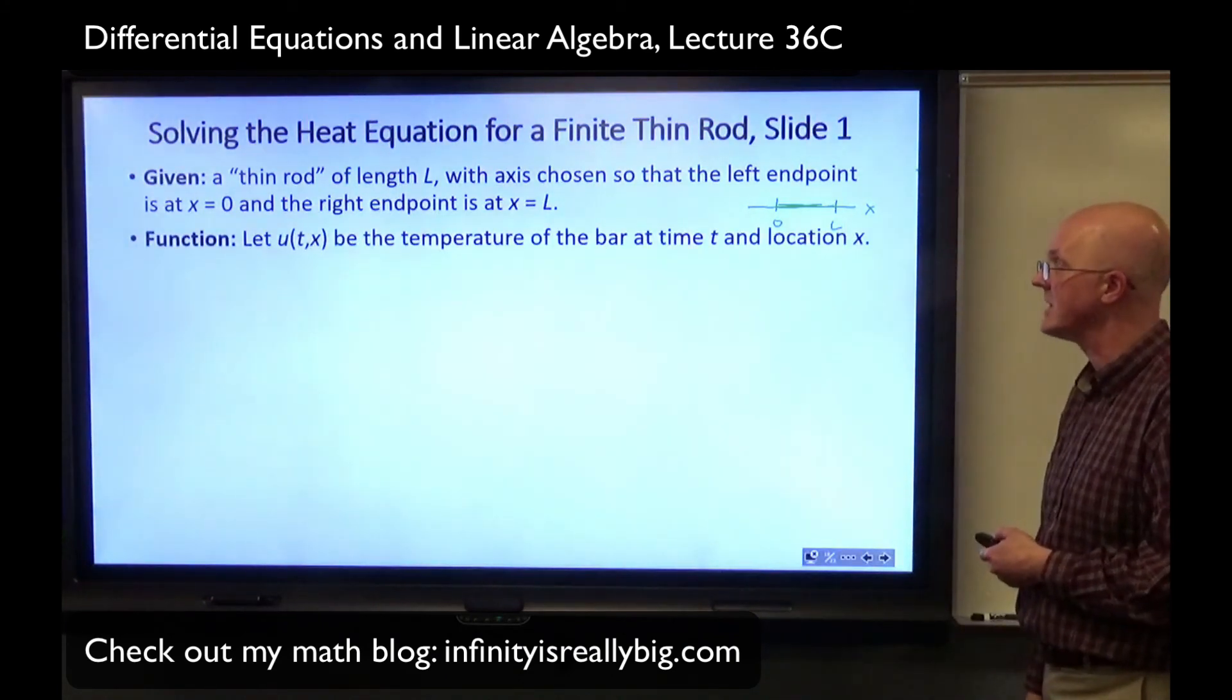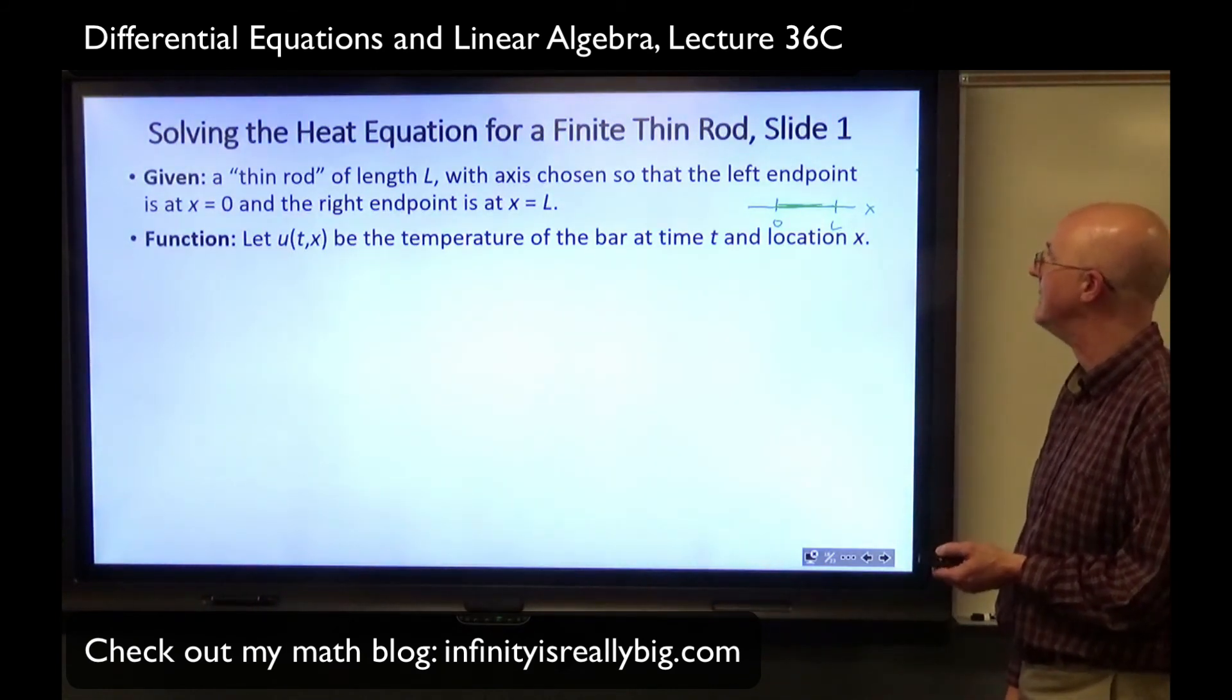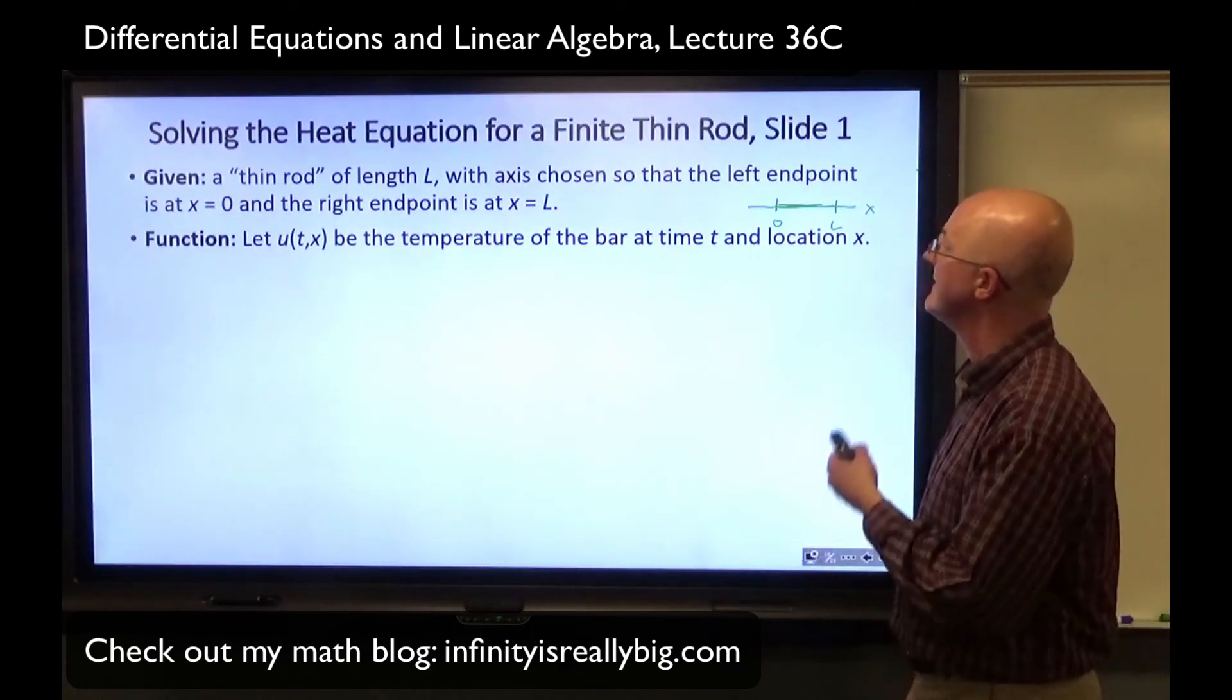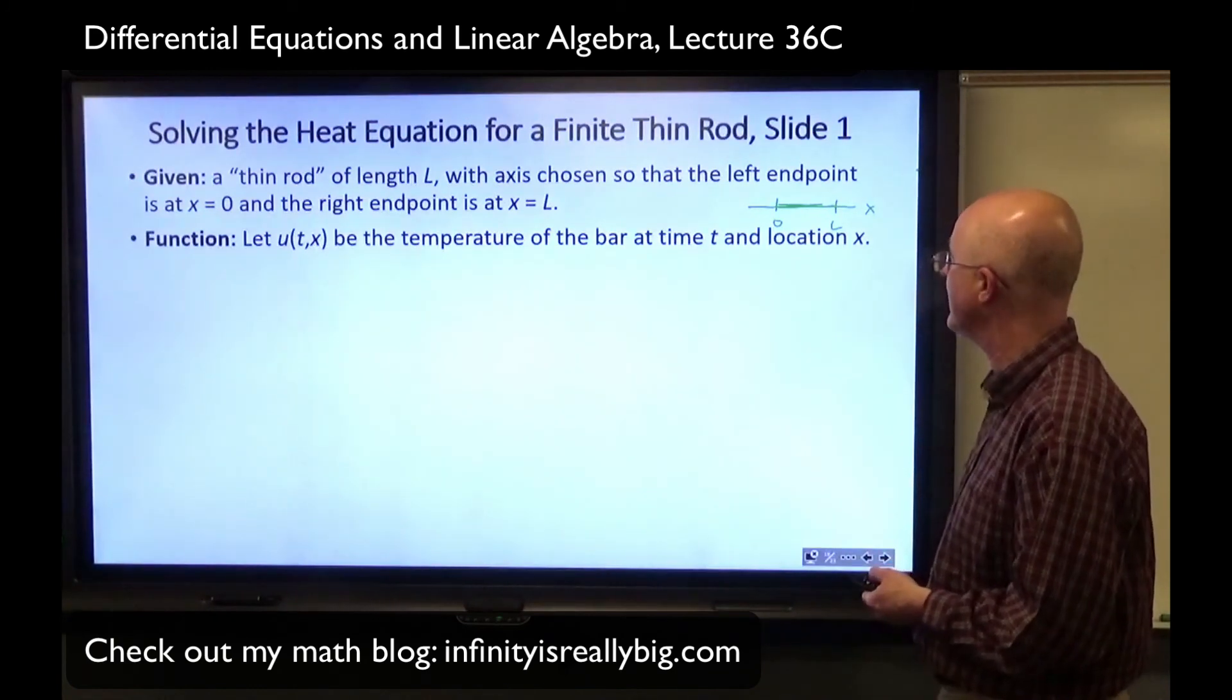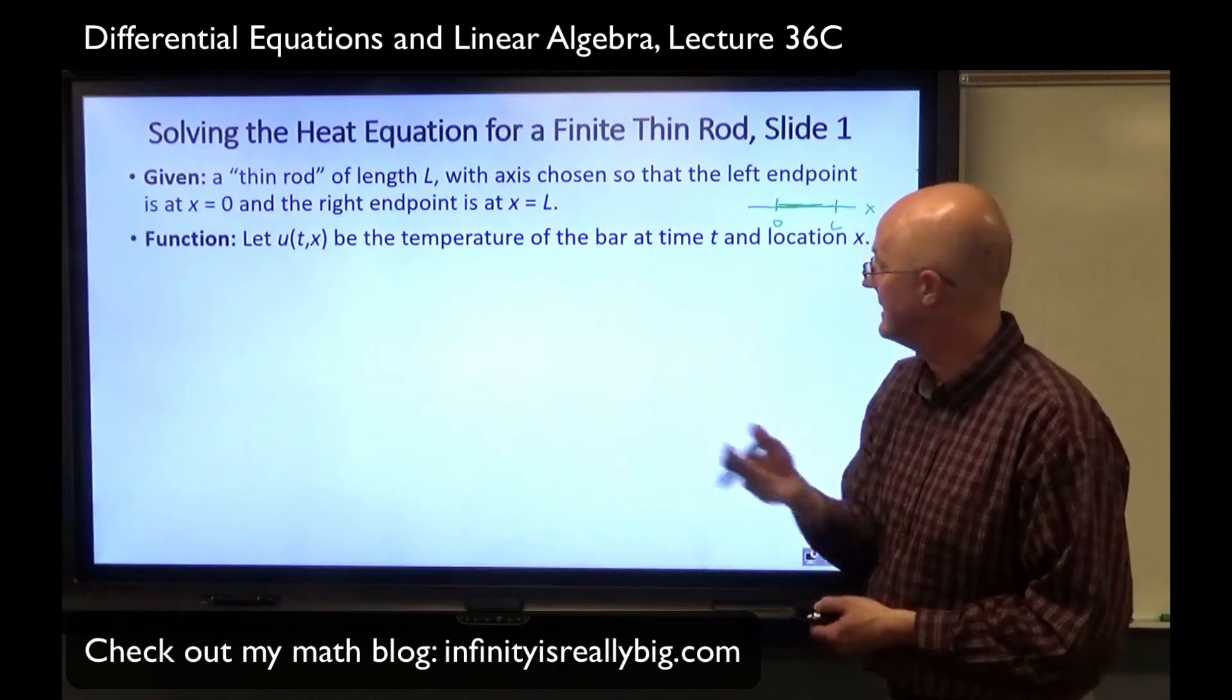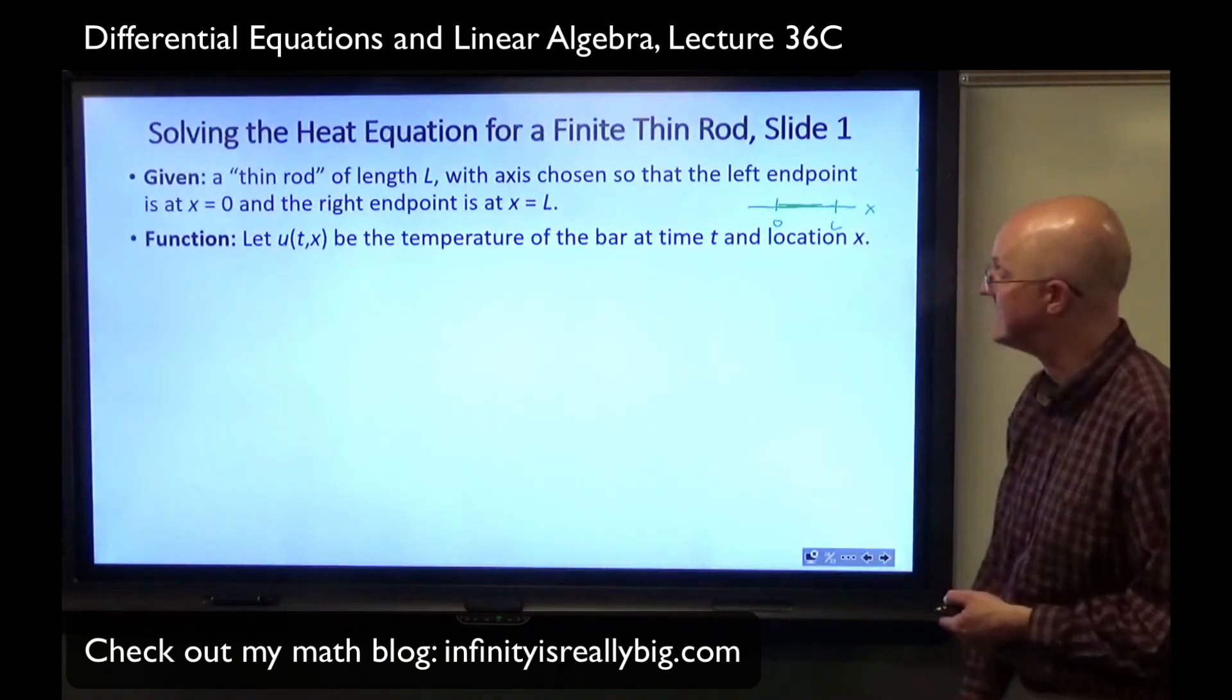We've got our function that we want to solve for. u(t,x) is a function of two variables. It's going to represent the temperature of the bar at time t and at location x. If t and x are fixed, that is one number. That is the temperature in whatever units you happen to be using. But it changes. Over time, as t changes, it also changes in x. We're going to have an initial temperature distribution when t is 0.